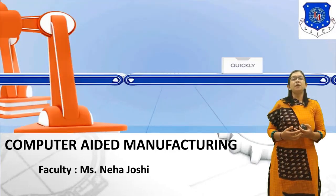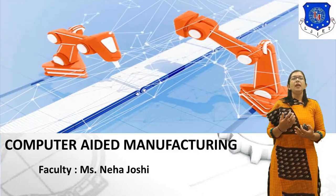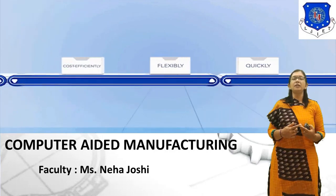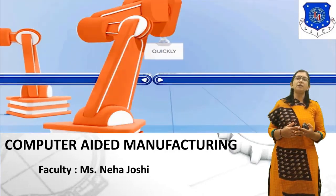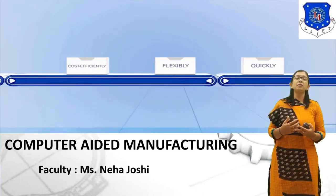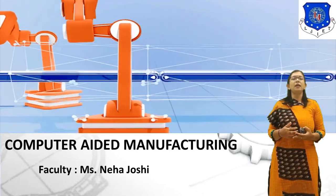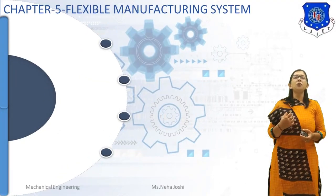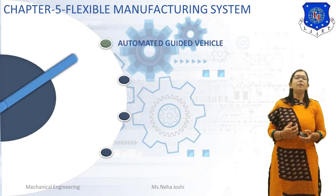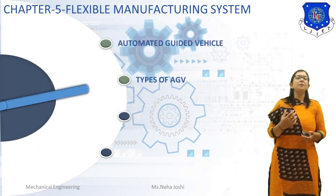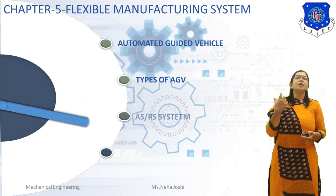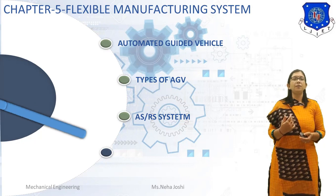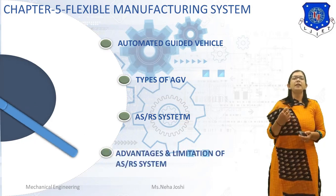Let's start our fifth chapter, that is Flexible Manufacturing System. In the previous session, we covered different topics like Advances of Flexible Manufacturing System, Limitations, Applications, and Workplace Handling in FMS. In today's session, we will cover Automated Guided Vehicles, Types of AGVs, the ASRS System which is known as Automated Storage and Retrieval System, and its Advantages and Limitations.